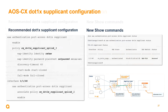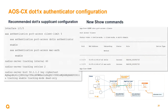Configuration-wise, on the dot1x authenticator interface you configure port access dot1x authenticator with both dot1x and MAC auth enabled. If you have a MAC auth client connected to a switch and want to authenticate on a port such as 1/1/1, you can do so by also enabling MAC auth on the dot1x authenticator.